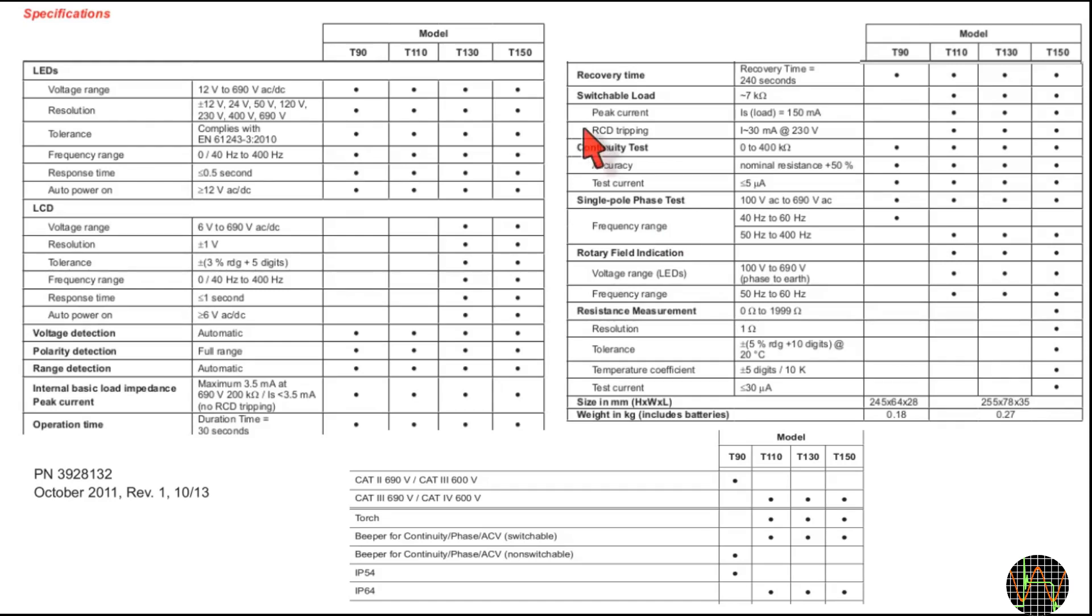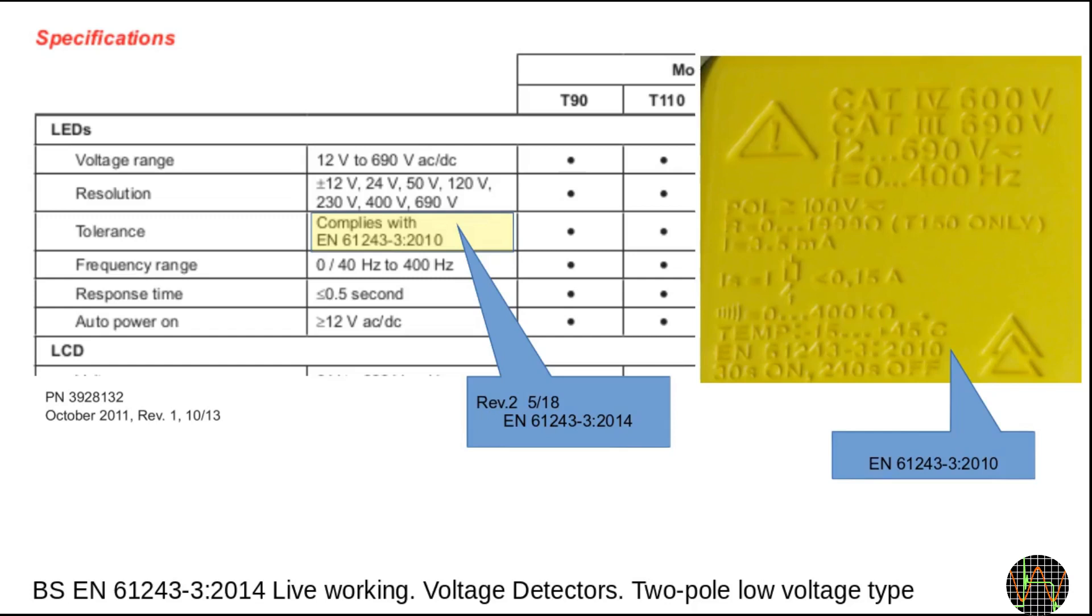An important feature of the T110 against the T90 is the capability to switch a load into the measurement circuit to trigger RCDs. The other differences between T90 and T110 are the better cut rating and IP protection offered by the T110, the built-in torch which can come in handy, and being able to turn the beeper on and off, which at least for the T110 is quite loud.